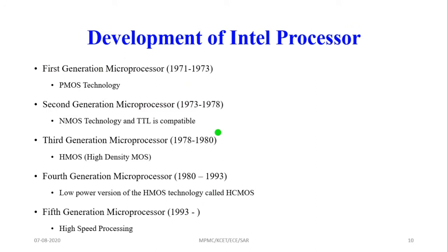Now we are going to see the development of Intel processors, divided into five categories. The first generation microprocessor spans the years 1971 to 1973. These were designed using PMOS technology, which provided low cost, slow speed, and low output current, and was not compatible with TTL — Transistor-Transistor Logic.